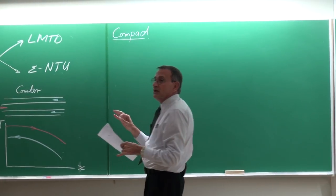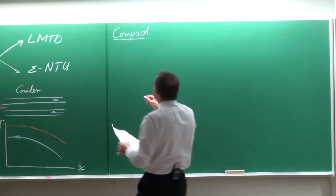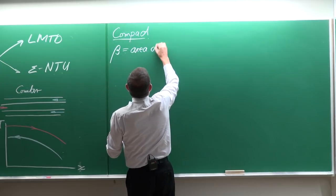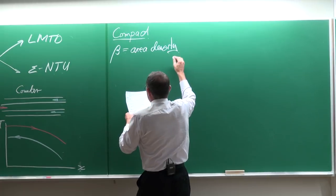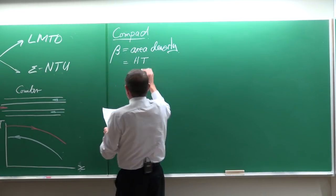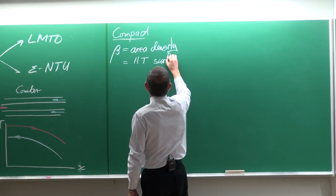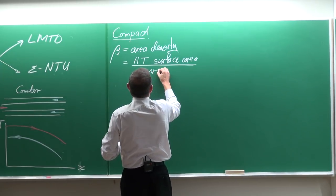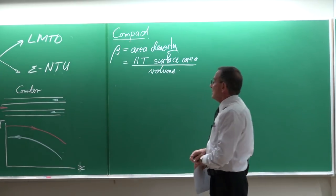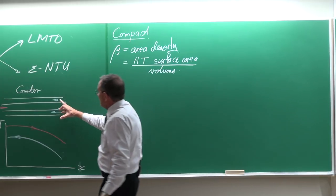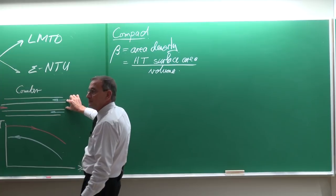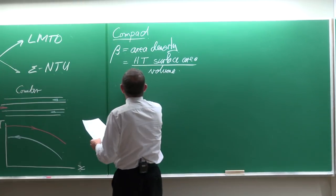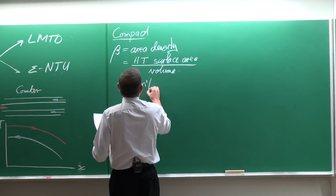There is a definition for compact heat exchangers called area density: it is the heat transfer surface area divided by the volume of the heat exchanger. The units are always square meters per cubic meter.